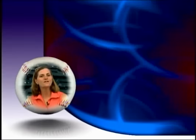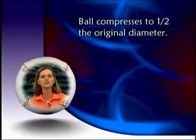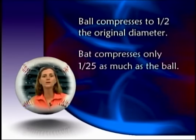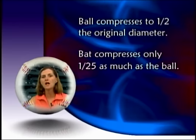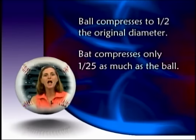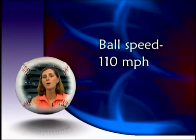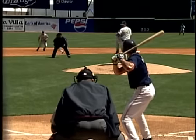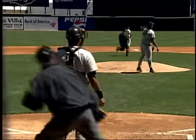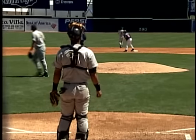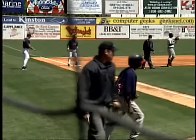So what happens to a ball during all of this? First of all, it compresses to nearly half of its original diameter, while the bat compresses only about 1/25th as much as the ball. The ball and bat now have potential energy stored in them like a compressed spring. Assuming it's a solid hit, the release of this stored energy may result in a ball leaving the bat at around 110 miles per hour. With bat speed and the velocity of the ball held constant, the only other way to maximize the energy transfer to the ball is to alter the COR of the objects involved.